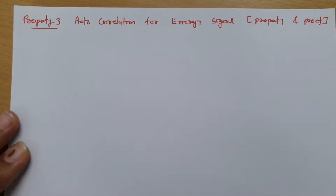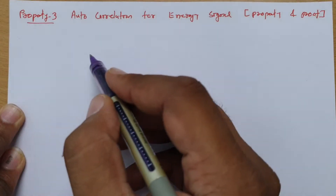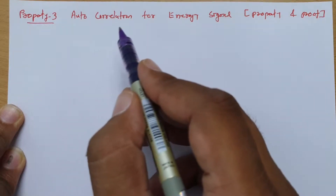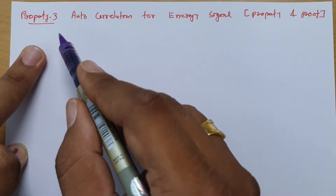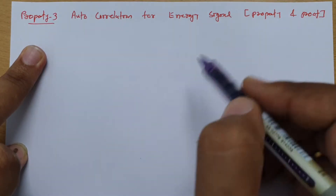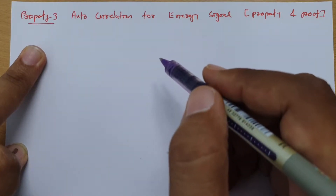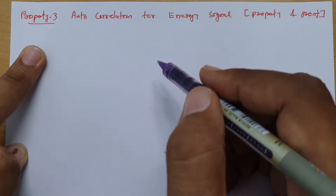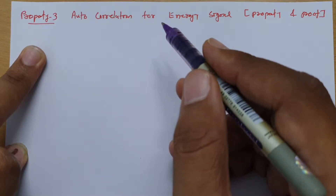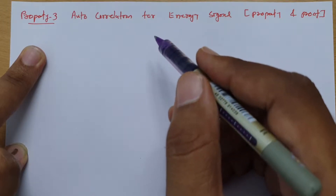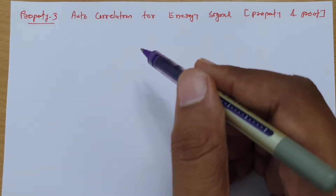Welcome to the Signal and Systems lecture series. In this session, I'll explain the third property of the autocorrelation function and then provide a proof of that third property. I have already listed four different properties of autocorrelation function in my initial session, and here I'll cover the third one.